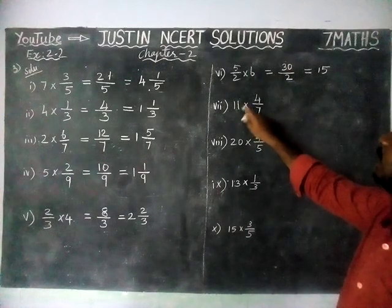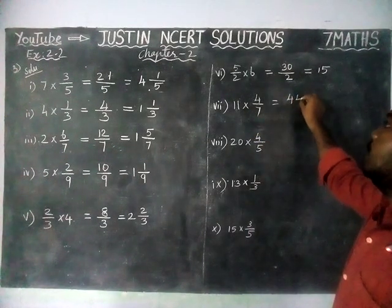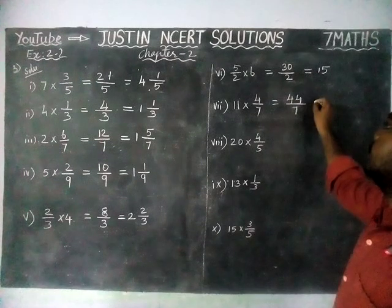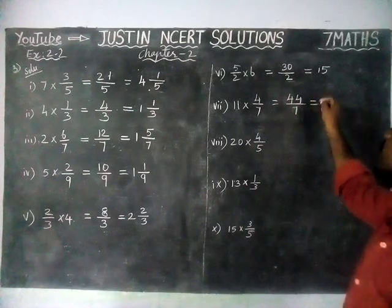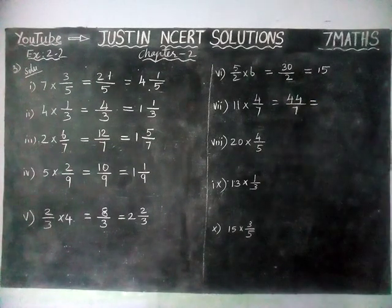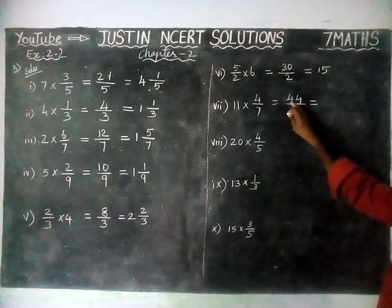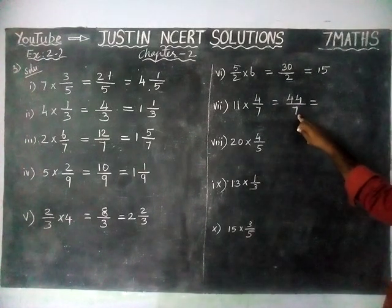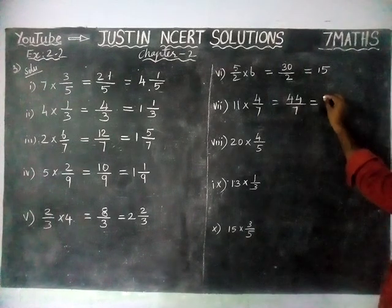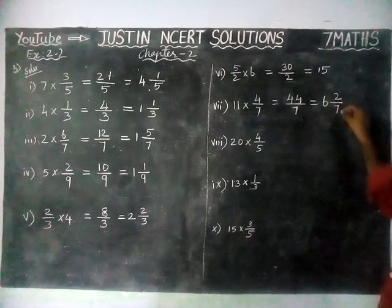Next, 7th question: 11 fours are 44, divided by 7. In 44, how many 7s are there? 5 sevens are 35, 6 sevens are 42. So there are 6 sevens in 44, giving 6 as the whole part. Remaining is 44 minus 42 equals 2, so the answer is 6 and 2 by 7.